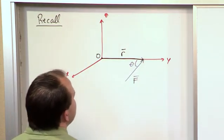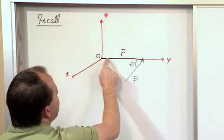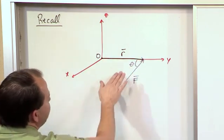And you need to know the angle between that and the distance vector from where I'm trying to rotate to.